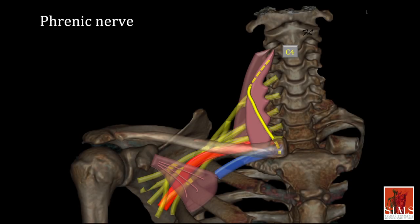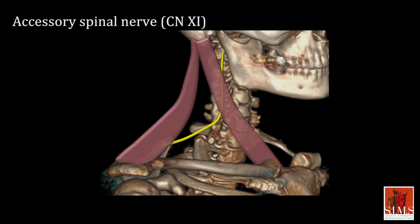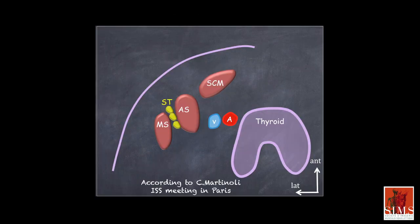After our overview of the brachial plexus, we have a bonus on the main cervical nerves, largely inspired by a presentation given by Carlo Martinelli at the 2016 ISS meeting in Paris. In my demonstration, I already showed you the suprascapular nerve, which splits from the superior trunk, anterior to the middle scalene, but other nerves are also clearly visible.